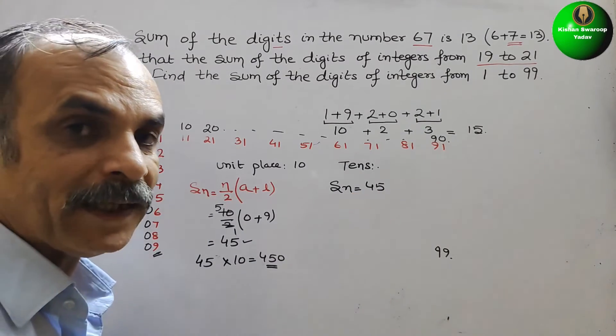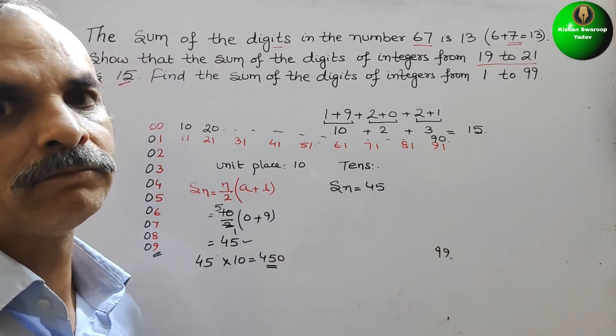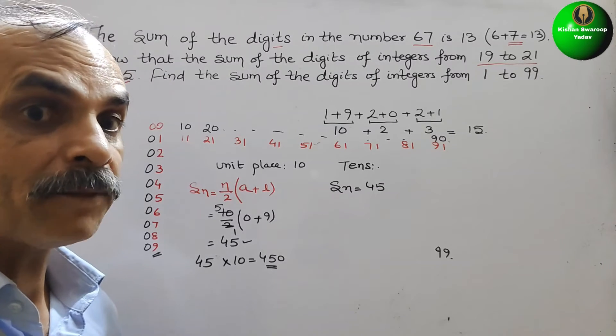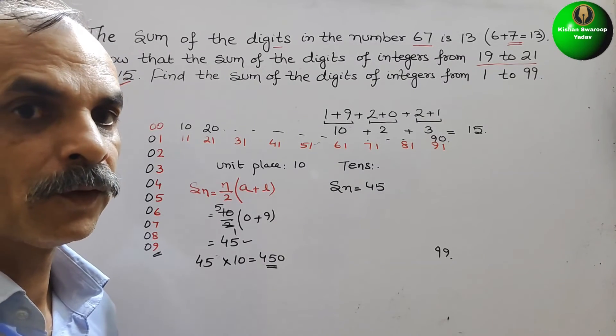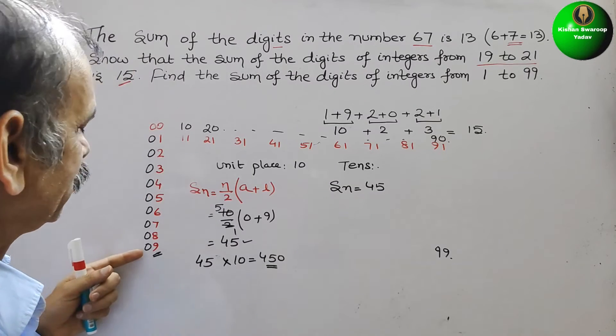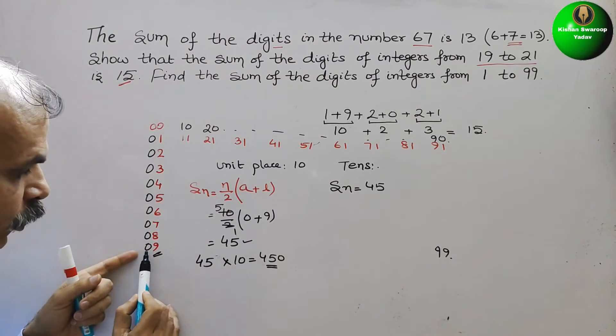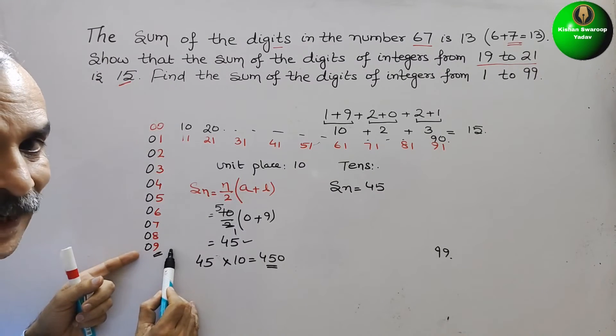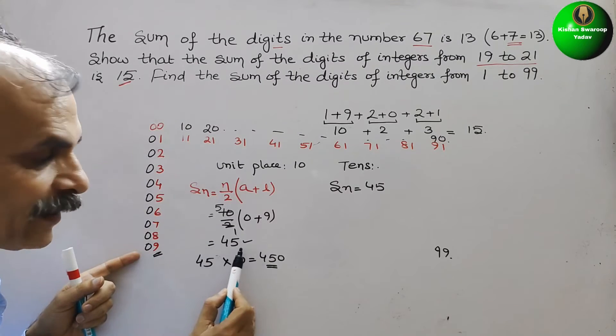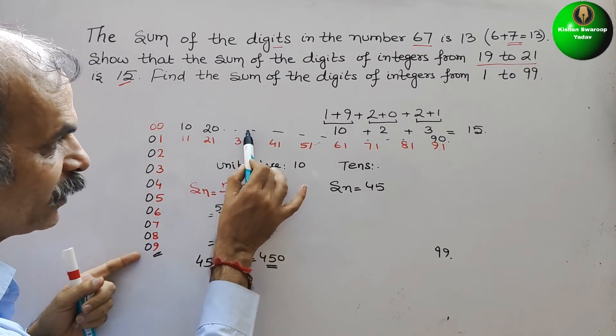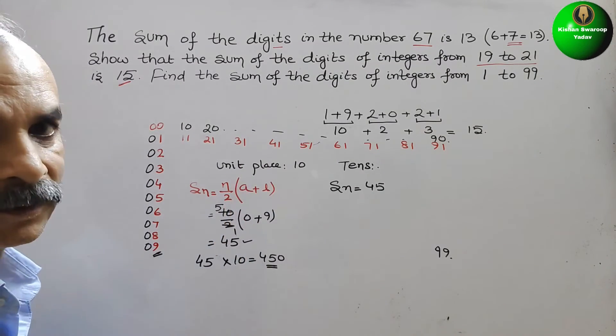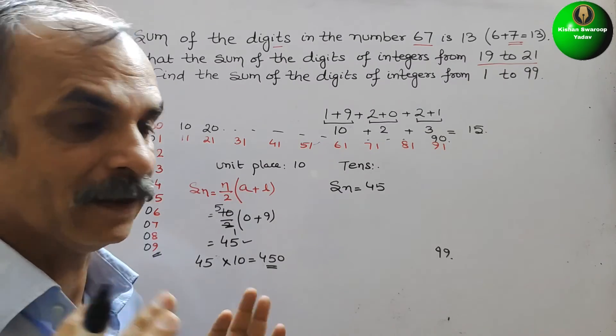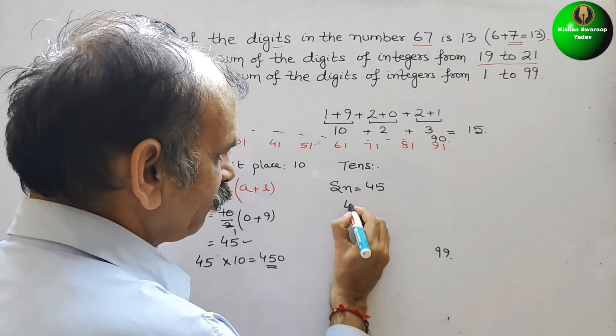But it was repeated for 10 times again, 10 times it is repeating. How? You can see this: 0 is here, here comes 1, 19, 10, 29, 39, 49. So that means 10 into 10, 10 times it will be repeated. So now again it will be 450.